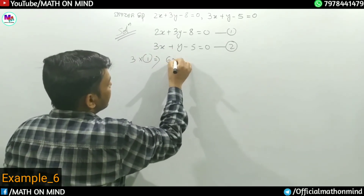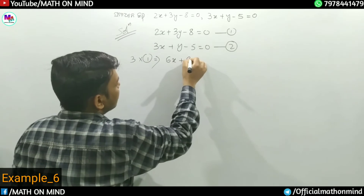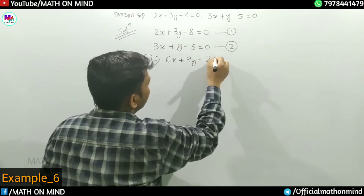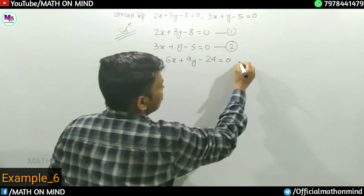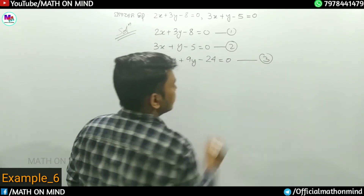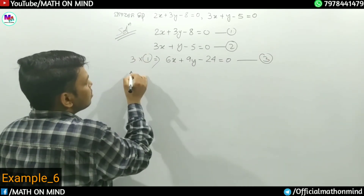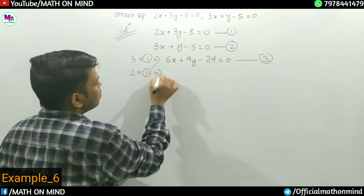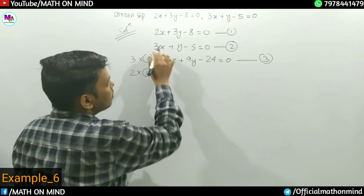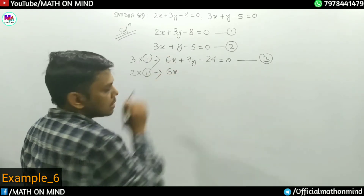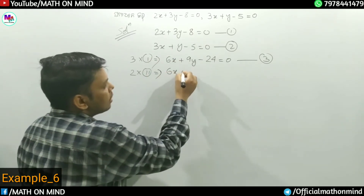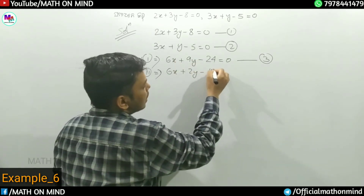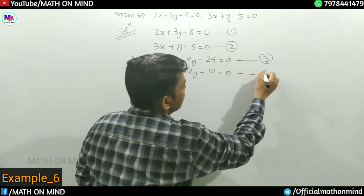6x plus 3y minus 24 equals 0. We multiply the first equation. 6x plus something, multiply by the way, two times minus five into the next, ten is equal to zero — equation.